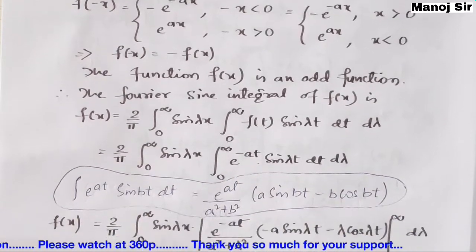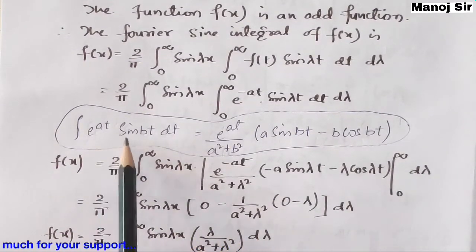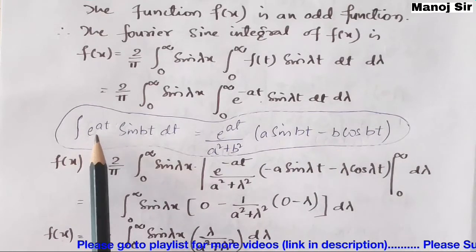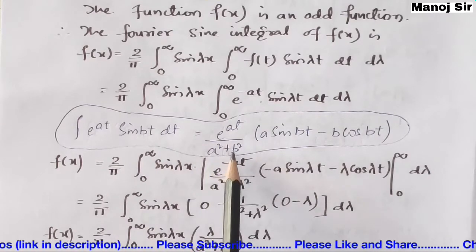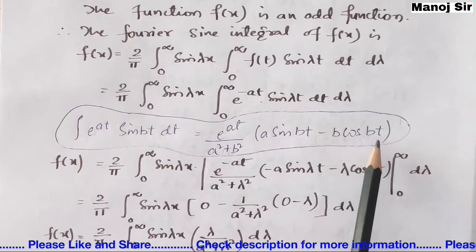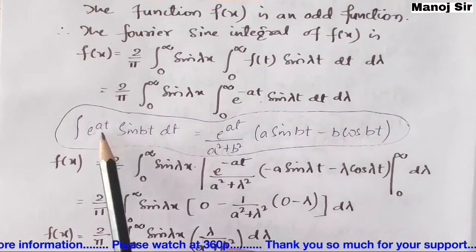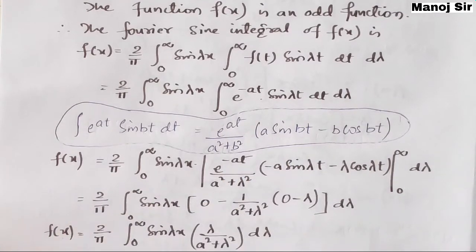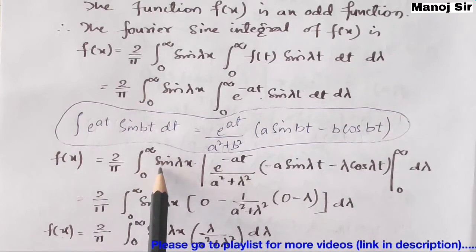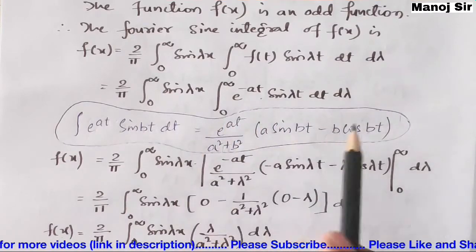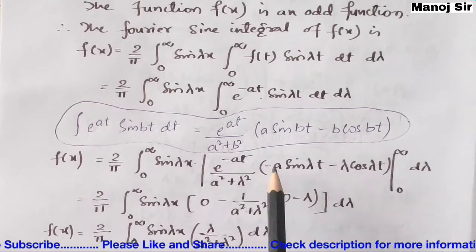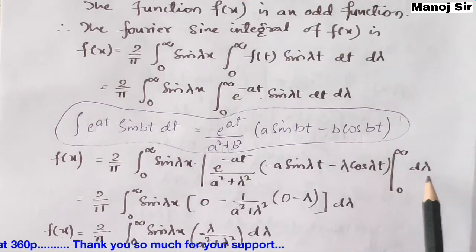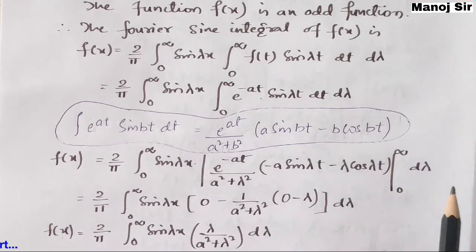We use the formula: ∫ e^(at) sin(bt) dt = e^(at) / (a² + b²) × [a sin(bt) - b cos(bt)]. Comparing, here a = -a and b = λ, so applying the formula gives: e^(-at) / (a² + λ²) × [-a sin(λt) - λ cos(λt)], evaluated from 0 to ∞, times dλ.